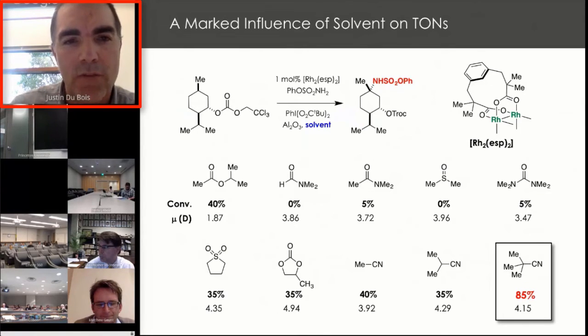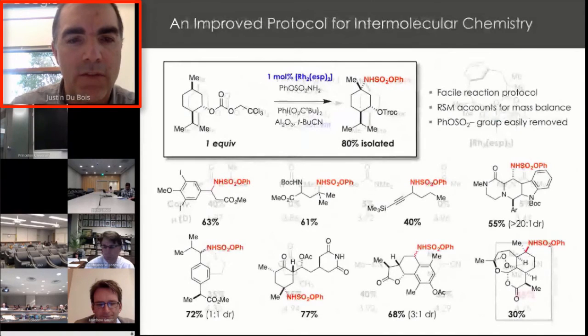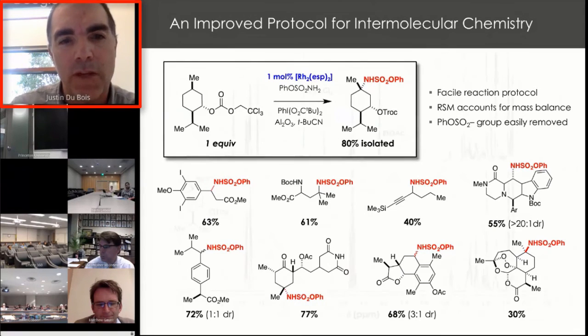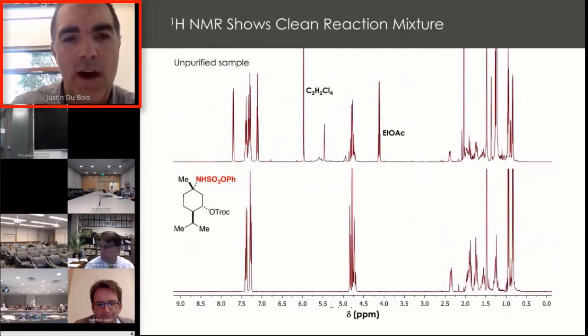Fortunately, Nick Chiappini was bold enough to try a few more solvents, including solvents like sulfolane and propylene carbonate, looking at acetonitrile, which we had known for some time had always been a marginal solvent. But ultimately, when he tried t-butyl nitrile, we saw a rather dramatic improvement in the overall product yield. This was a great day for us in the lab. For this particular substrate, seeing an 85 percent yield of the product is really a terrific result.